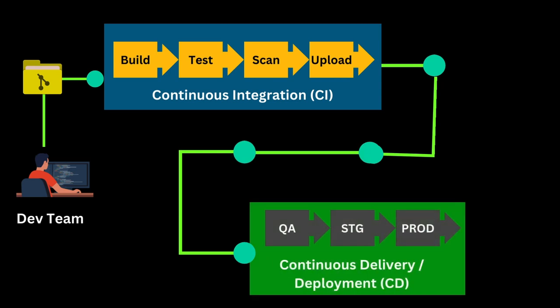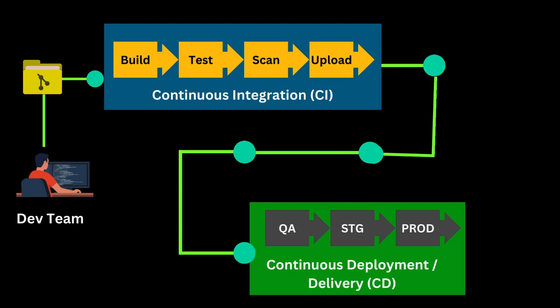After that, the new build will be deployed in QA and staging environments, and finally to the production environment. This concludes the continuous deployment or delivery process. The difference between continuous delivery and deployment is that continuous delivery needs some manual trigger before production deployment, while continuous deployment is an automated deployment to production along with other non-production environments.